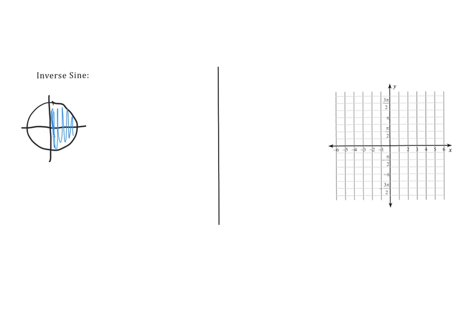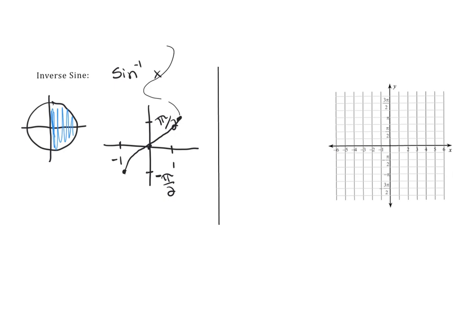If you think about the unit circle, inverse sine has restrictions where we're only using quadrant one and quadrant four. The graph of the parent function — inverse sine of x — has a domain from negative one to one, going from negative pi over two to pi over two. The key points are (0, 0), (1, pi/2), and (-1, -pi/2). Think of it as a curve that stops at those endpoints — it doesn't keep going.